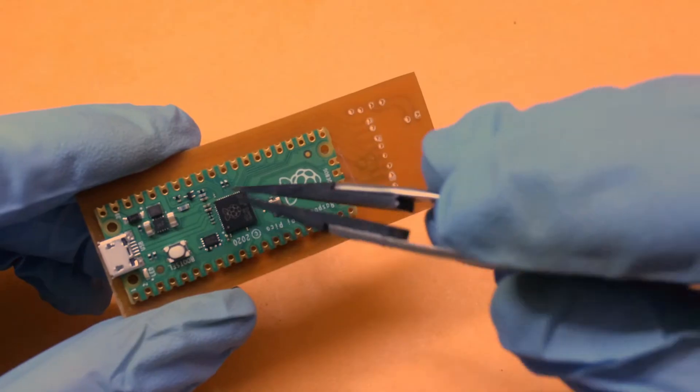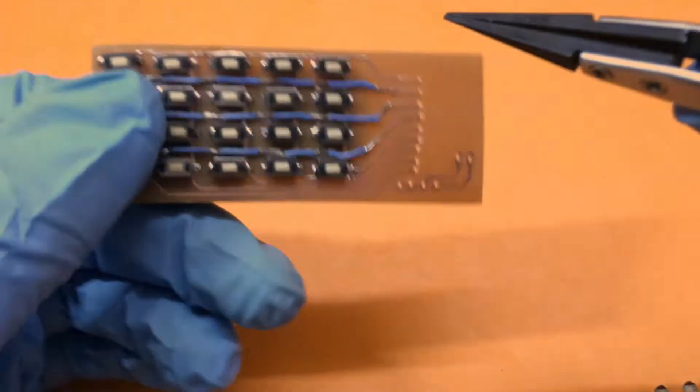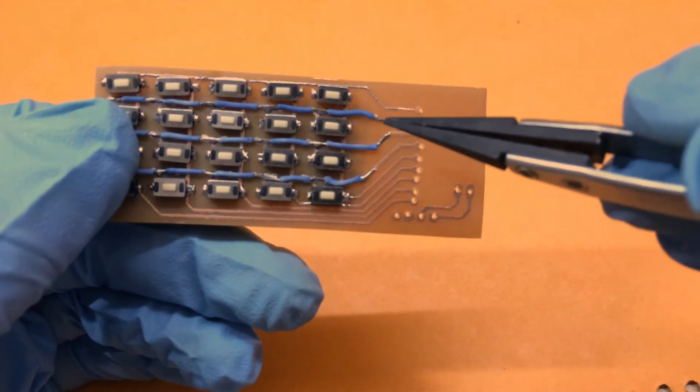Now we will connect wires from our Raspberry Pi to these pads which will in turn connect it to the rows and columns pin of our matrix.